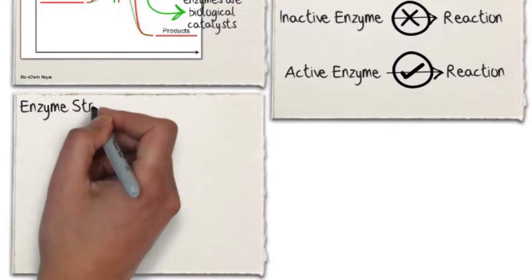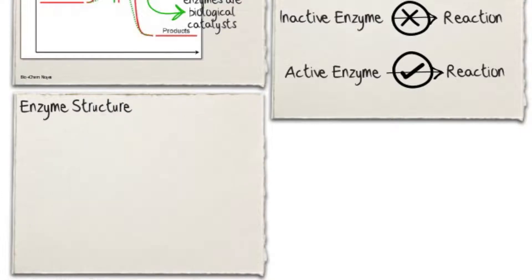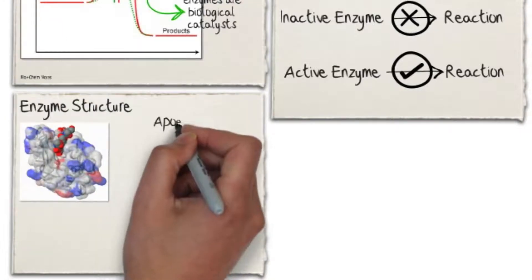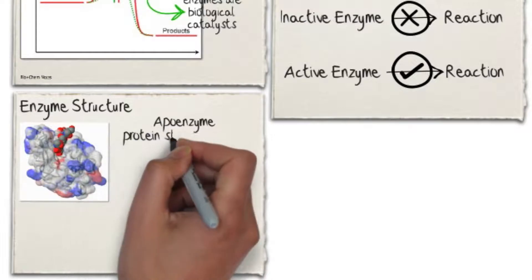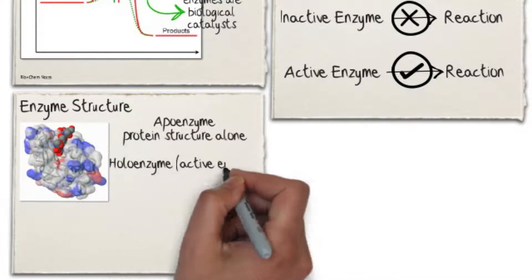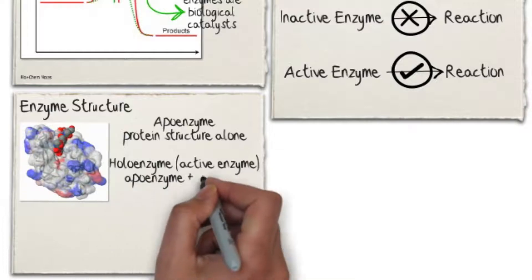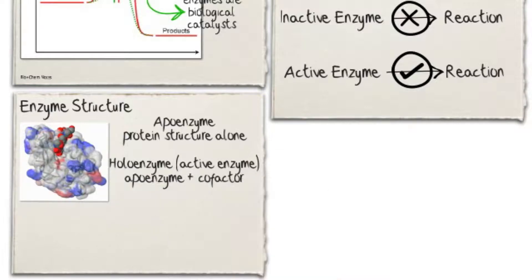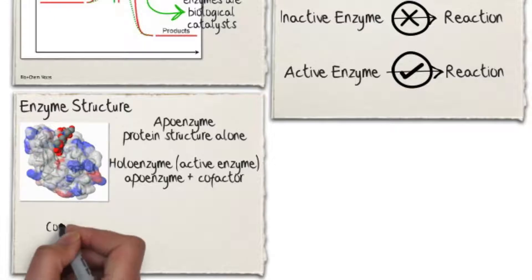The structure of an enzyme has many regions where other molecules can bind and affect how the enzyme works. The protein structure of an enzyme is called an apoenzyme. When an apoenzyme binds a molecule called a cofactor, the enzyme becomes active and is called a holoenzyme.